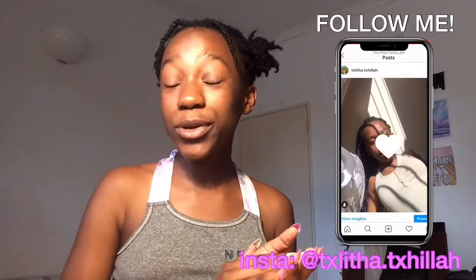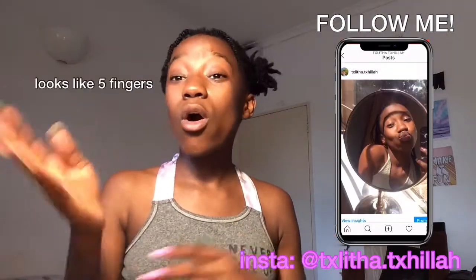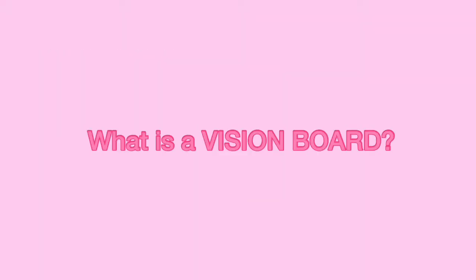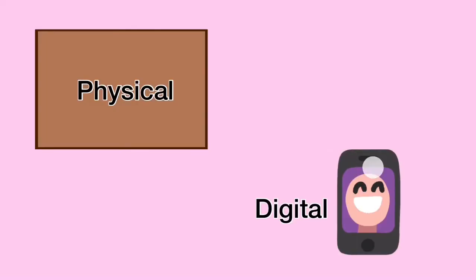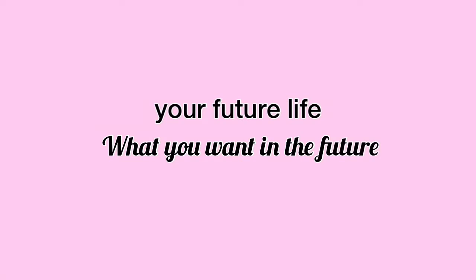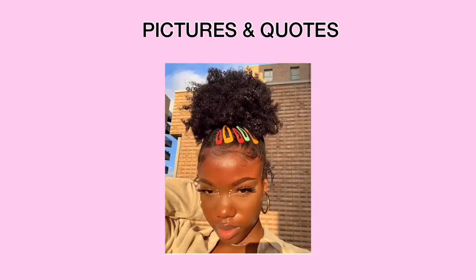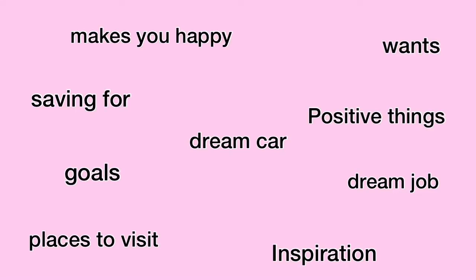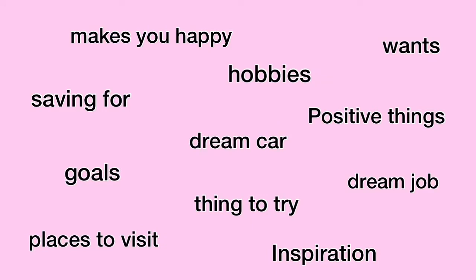For creating a digital vision board you're going to need only four steps and it's very simple. A vision board is a physical or digital representation of your future life, or what you would like in the future. On your vision board you would put pictures and quotes, your dream car, your dream job, things that you would want to visit in the future, things you want to save up for.